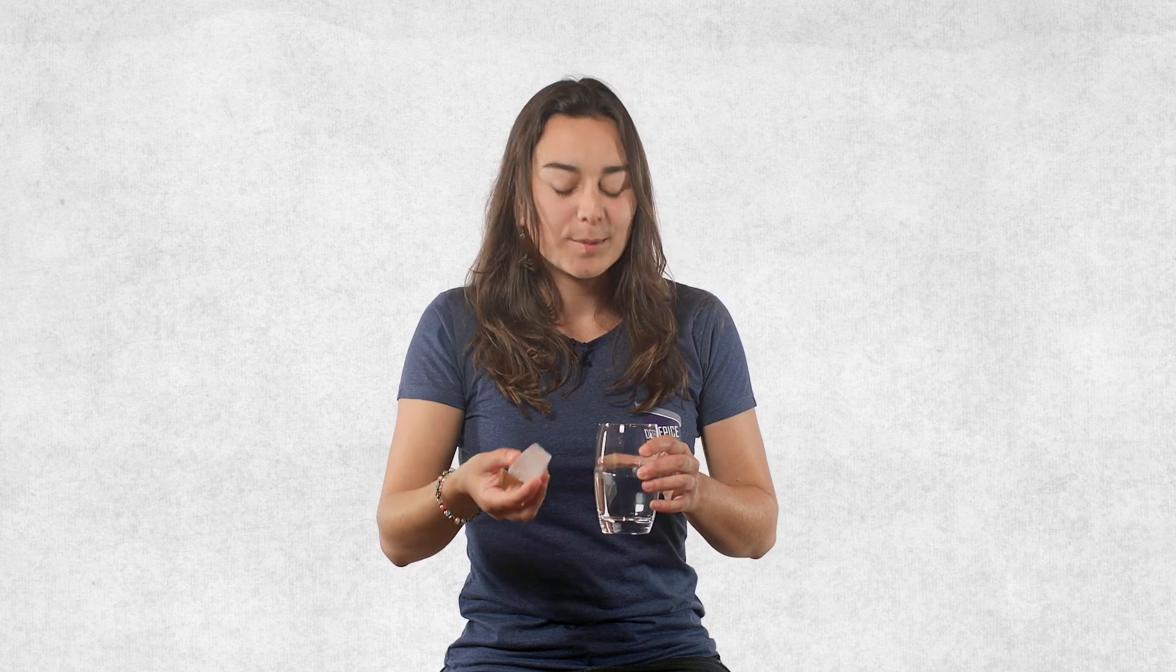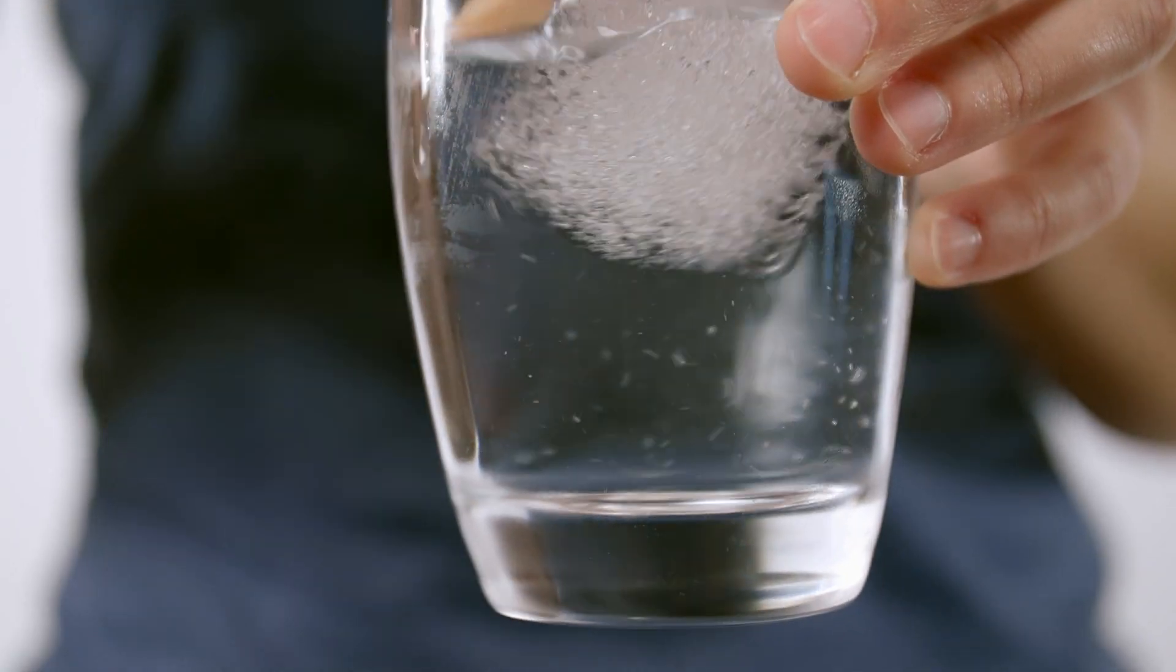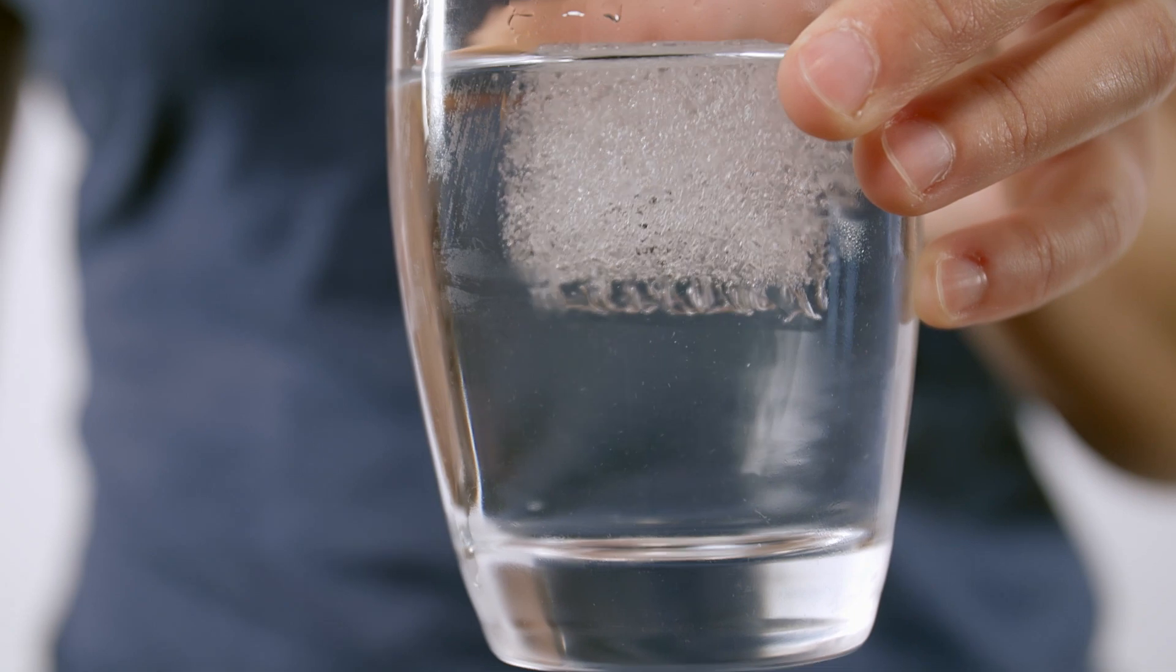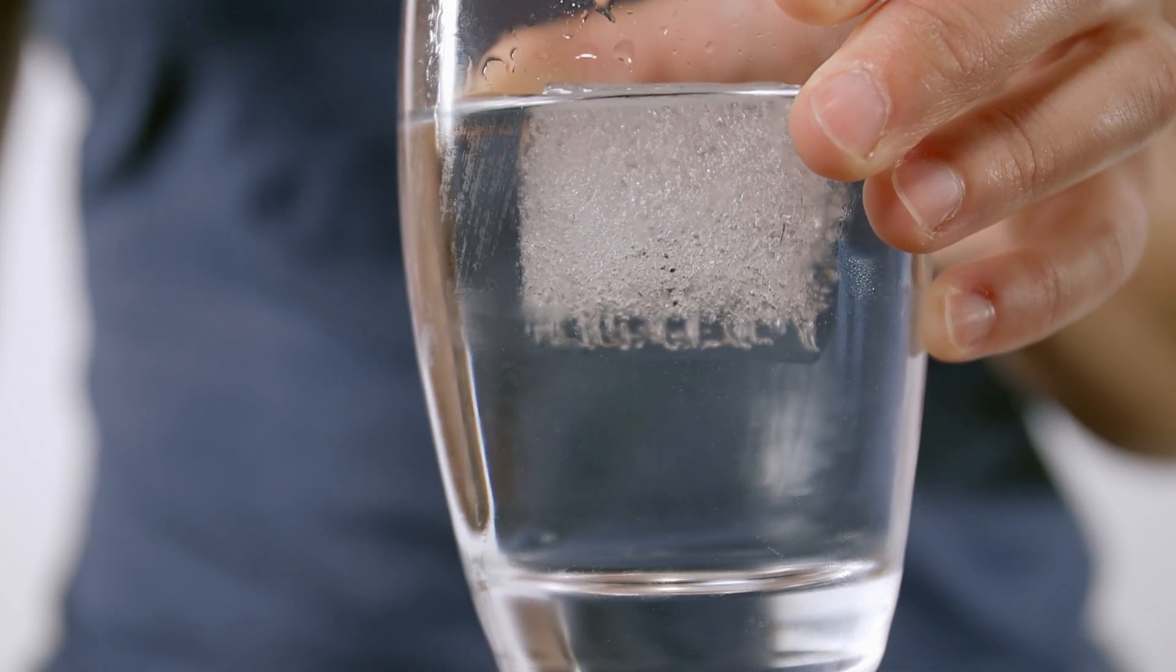When the ice forms, it traps air bubbles. Air bubbles in ice cores are very precious because they are the only archive that preserves the past composition of the atmosphere.